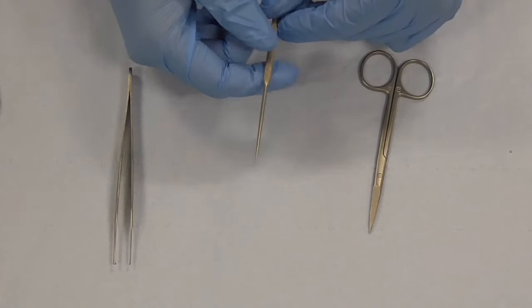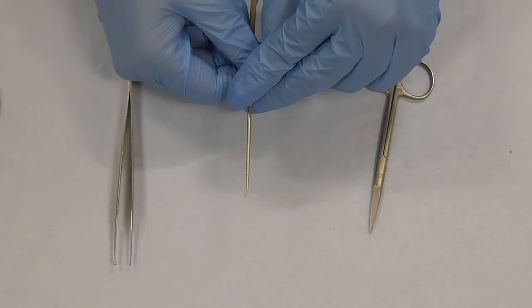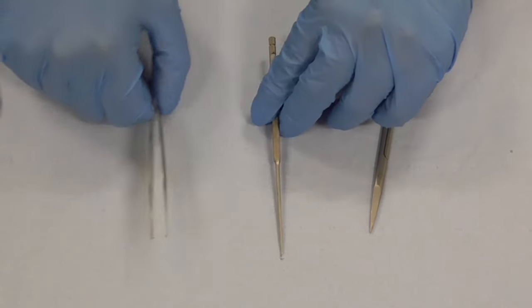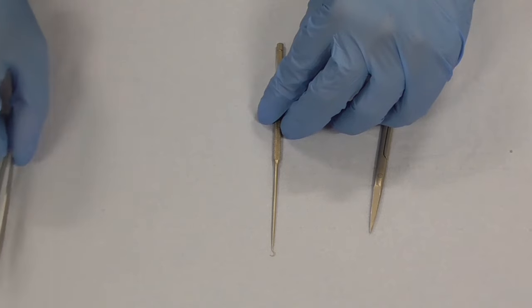However most suturing kits don't tend to have a skin hook even though it will give you the least amount of trauma to the skin. So you've got to get used to using a dissecting forceps.